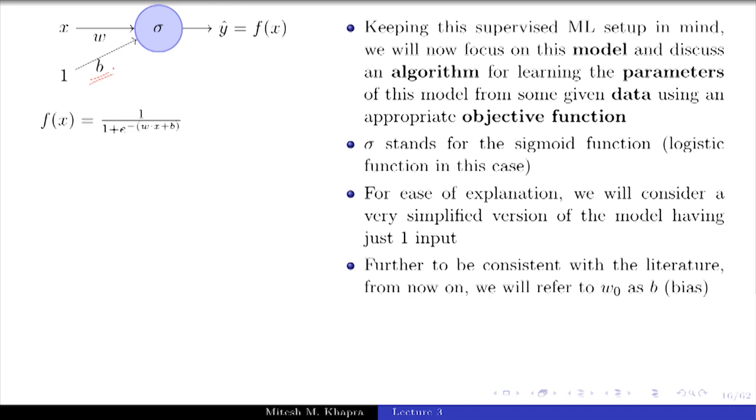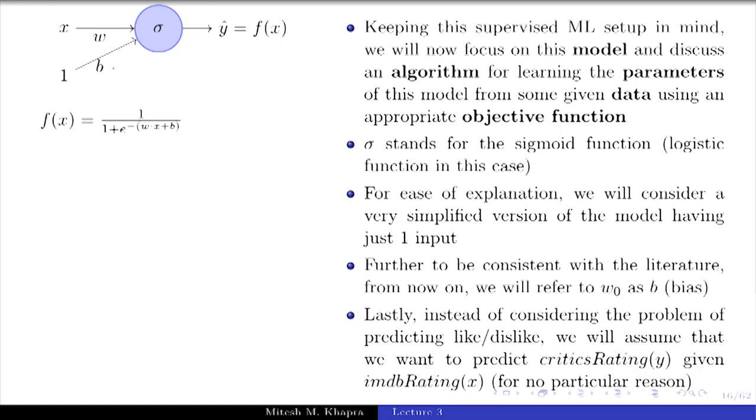So I have two parameters w and b which I need to estimate. And this is my model for the movie example. The change which I am going to make is instead of deciding whether I like or dislike which is 1 or 0, the setup that I am going to work with is that I am giving the critics rating and I want to predict the IMDB rating. So I am given a real value and I also want to predict a real value. This just makes life easier for me for explaining a few things. But the same algorithm would also hold if you had a binary output, and we will see that later on in the course.